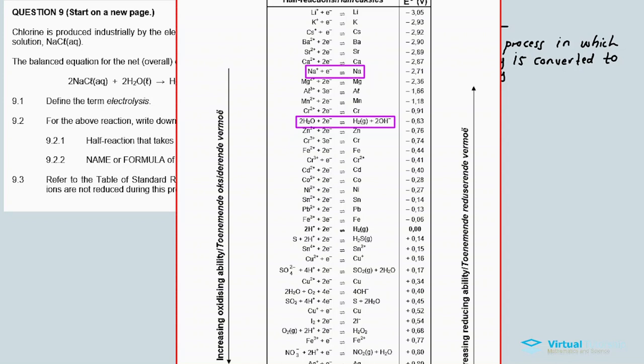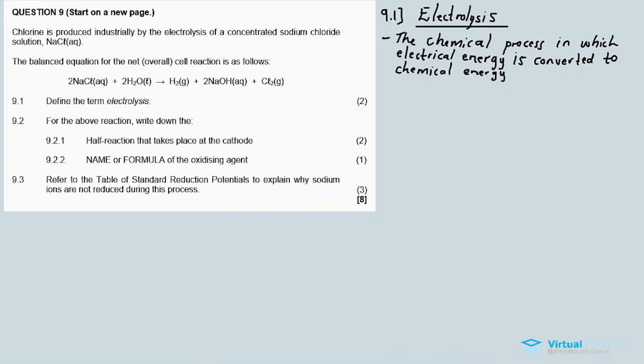So look here. Since sodium is up high and water is down low. So it means that water is more inclined to be reduced than sodium. Because water has more oxidizing ability than sodium. So therefore, it means water will be reduced. Water will be reduced. Because water has more oxidizing ability than sodium.